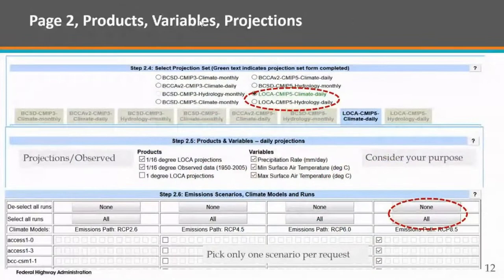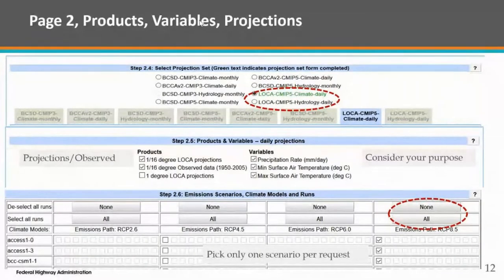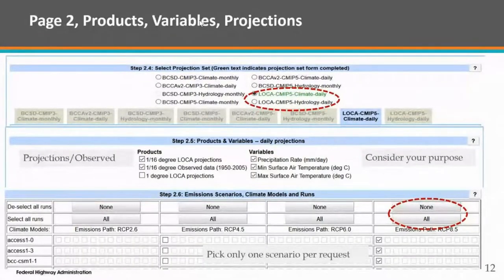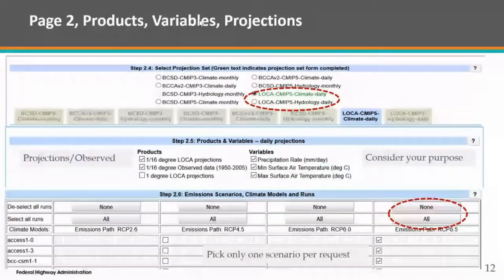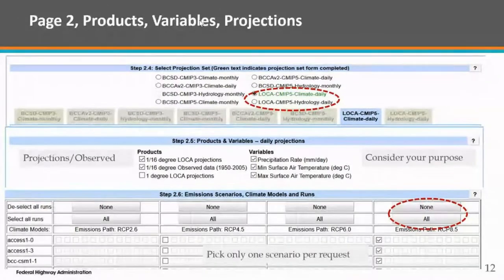When downloading your data, you pick the specific data you want. You'll see a red dotted circle around LOCA CMIP5 climate data — that's essentially the data you pick when using our tool. We only focus on that data. In the future we may try to add other data types, but for now this is what we use, and it's a reasonable, good set of data.